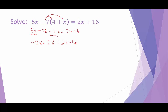Now I'll simultaneously add 28 to both sides and also subtract 2x from both sides — to move all of the variable terms to the left-hand side and all the constants to the right-hand side. Negative 2x minus 2x is negative 4x, and 16 plus 28 is 44.